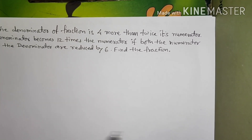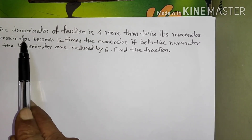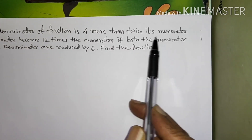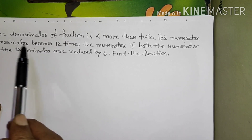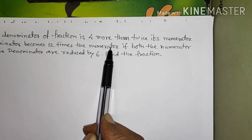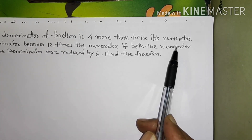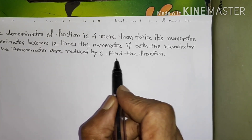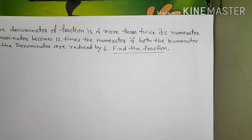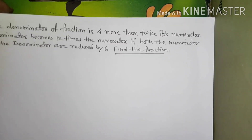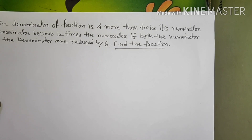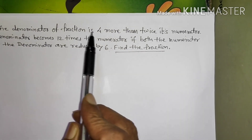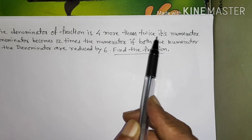Now, another example we will see. The denominator of a fraction is 4 more than twice its numerator. The denominator becomes 12 times the numerator if both the numerator and denominator are reduced by 6. Find the fraction. Such type of example — I have told you first — you have to read it twice, thrice, till understood.